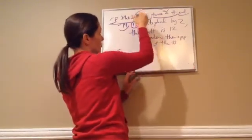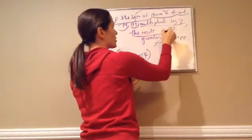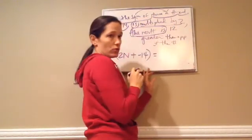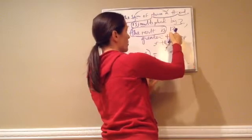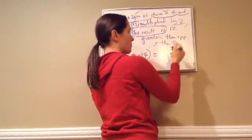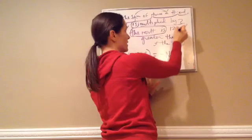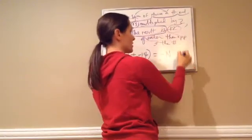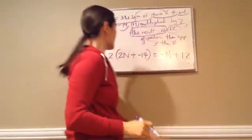2N plus negative 14. Is multiplied by 2. You do like the quotient. Yes. We're going to multiply that whole thing by 2. Is, this is multiplied by 2. The result is, which means equals. Negative N plus 12. 12 greater than the opposite of a number, the opposite of a number is negative N, and then it's 12 greater than that, plus 12.